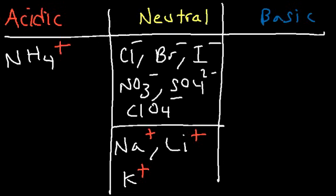So if you see like sodium, lithium, potassium, these ions are neutral in aqueous solution. Now acidic ions, one good example is the ammonium ion. That's a weak acid, so anytime you see it in an ionic compound it's a weak acid.